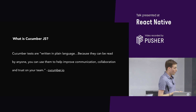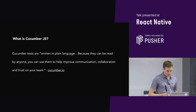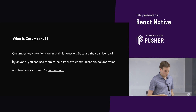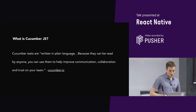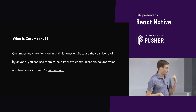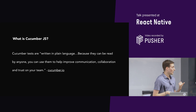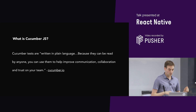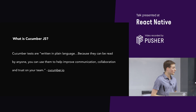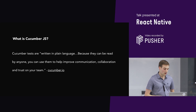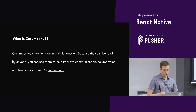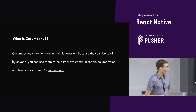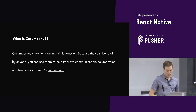Cucumber tests are written in plain language because they can be read by anyone. You can use them to help improve communication, collaboration, and trust on your team. This is from the Cucumber.io website. There are a lot of great examples there, but most of them are probably in Java — if you're familiar with the Java community, Cucumber is quite big and it's big across a lot of different languages. I haven't seen much of it in React Native.